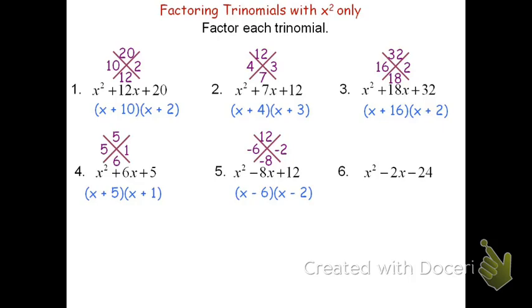For the last problem, we set up the diamond with a negative 24 for the product because it's minus 24 at the end. The middle value of negative 2 tells me the sum is negative 2. I'm looking for two factors that multiply to be negative 24 and add to be negative 2. Because the product is negative, I have one positive and one negative factor. The sum of negative 2 tells me the factor with greater absolute value is negative. I know negative 6 times 4 is negative 24, and negative 6 plus 4 is negative 2. Because it's a 1x squared, the factored form is the quantity x minus 6 times the quantity x plus 4. I hope this helps you — thank you for watching.